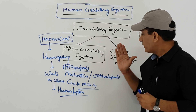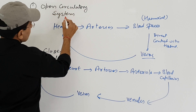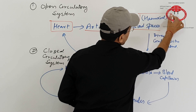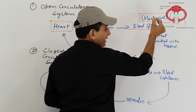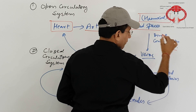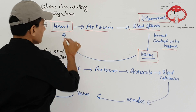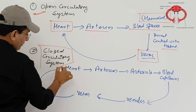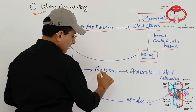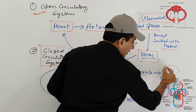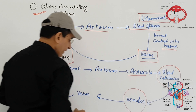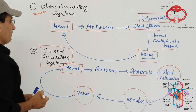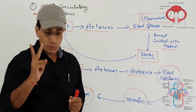In the open circulatory system, blood flows from the heart to arteries, then to blood spaces technically known as hemocoel, which is directly in contact with each tissue of the body, then flows into veins and finally enters the heart. In the closed circulatory system, the heart supplies blood to arteries, then arterioles, then blood capillaries, then venules, then veins, and finally back into the heart.